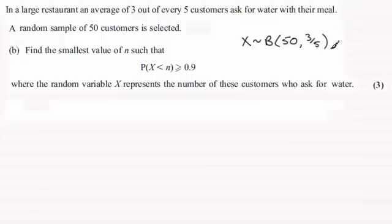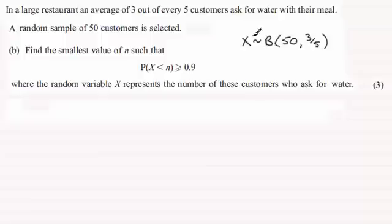So we've got a binomial distribution. When it comes to working this out, we're going to need to use the cumulative binomial distribution tables, but there's going to be a problem. In those tables, they only go up to values of P up to 0.5, and this probability is 0.6. So when this happens, the way around it is to look at the converse of the random variable X.